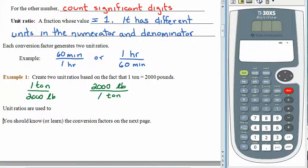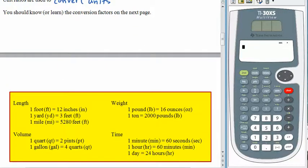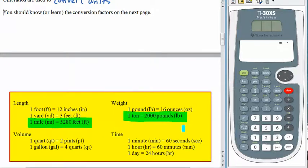Unit ratios are used to convert units — that's the whole point. Before we show how this works, let's look at several conversion factors. You probably know most of these already, but if there are some you don't know, it's not a bad idea to highlight them or put them on a note card. Most people know 1 foot equals 12 inches, but may not know 1 mile is 5,280 feet, or 1 ton is 2,000 pounds, or that 1 quart equals 2 pints.